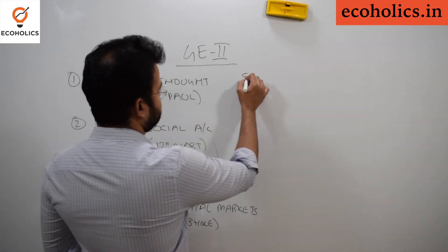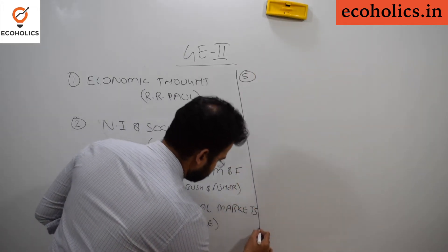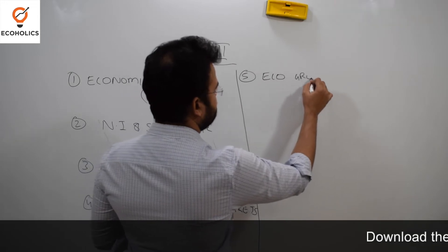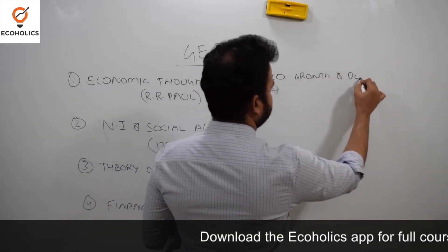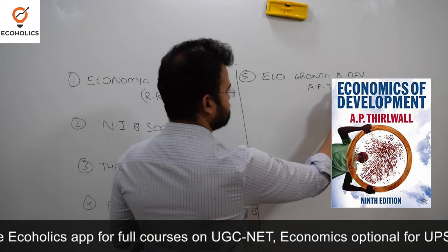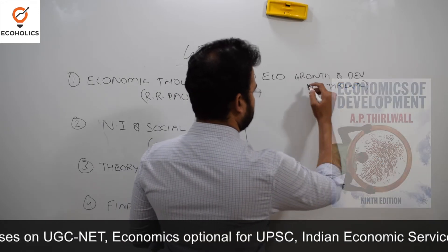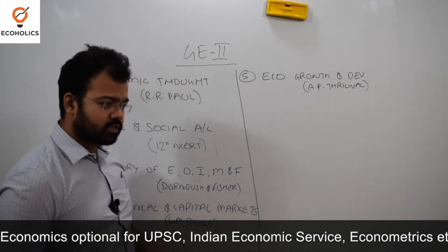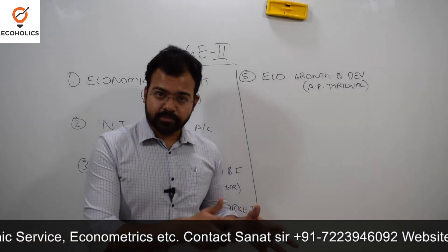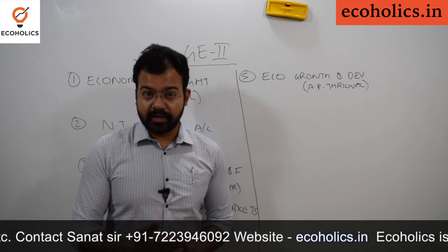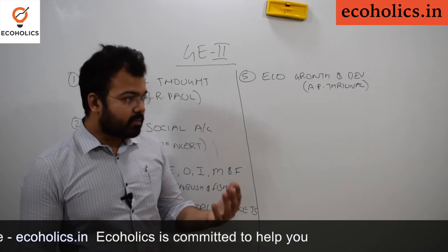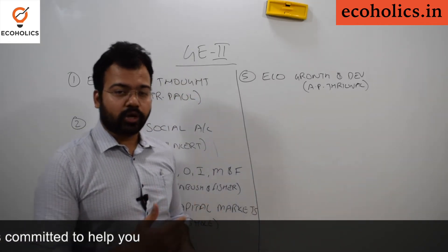The fifth topic is Economic Growth and Development. For this, the best book is A.P. Thirlwall. Although few people suggest Todaro as well, Todaro has a lot of content that is not very useful from our exam perspective — I'm not saying it's a bad book, but from the exam point of view, A.P. Thirlwall is the best book in order to qualify this exam.